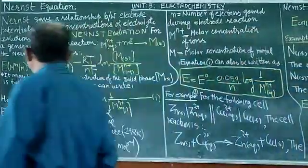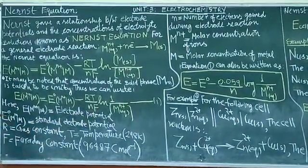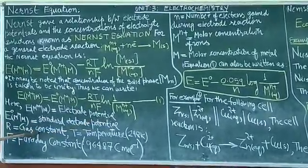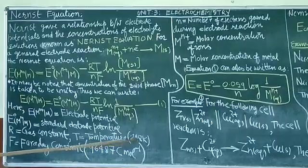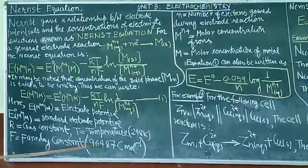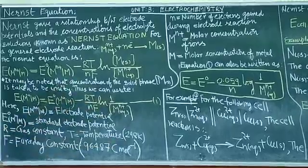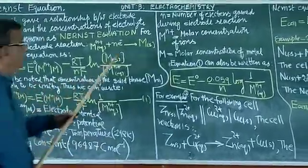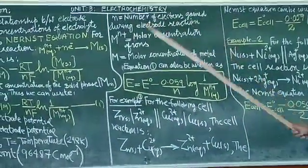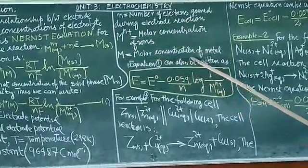E(M^n+/M) is the electrode potential. E°(M^n+/M) is the standard electrode potential. R is the gas constant. T is the temperature, 298 Kelvin. F is the Faraday constant, value is 96487 coulombs per mole. Small n is the number of electrons gained during electrode reaction. [M^n+] is the molar concentration of ions. Capital M is molar concentration of metal.